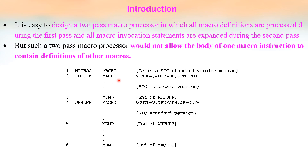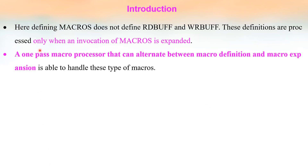This two-pass macro processor cannot handle the definition of one or two macros inside another macro. So we will follow another method — a single-pass or one-pass macro processor, which alternates between definition and invocation. In the previous example, defining MACROS does not define RDBUFF and WRBUFF. These definitions are processed only when an invocation or call of MACROS is expanded. A one-pass macro processor that can alternate between macro definition and macro expansion is able to handle these types of macros.